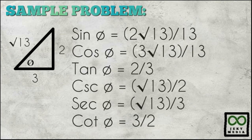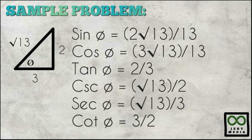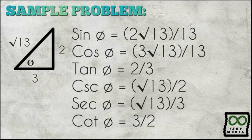We now have all the values of the six trigonometric functions. Sine theta is equal to 2 square root of 13 over 13. Cosine theta is equal to 3 square root of 13 over 13. Tangent theta is equal to two thirds. Cosecant theta is equal to square root of 13 over 2. Secant theta is equal to square root of 13 over 3. Cotangent theta is equal to three halves.